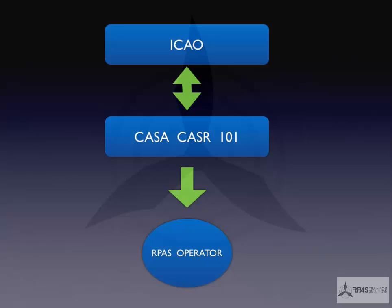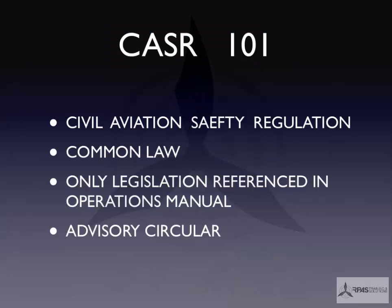ICAO realised the need for each individual country to come up with their own regulations that they could pass on to the operators — the UAV operators within each country. In Australia, we have what's called the CASR 101. CASR stands for the Civil Aviation Safety Regulation Part 101. This is our rules and guidelines for operating UAVs in Australia. It's part of Australian common law, and it's the only legislation that's referenced in your operations manual.